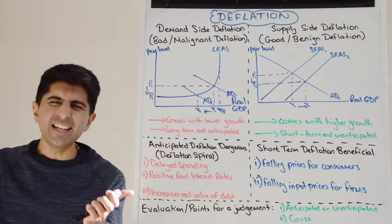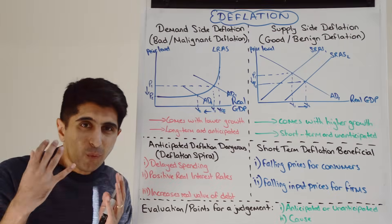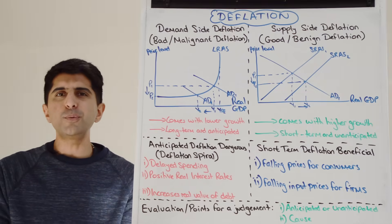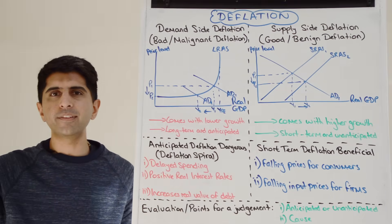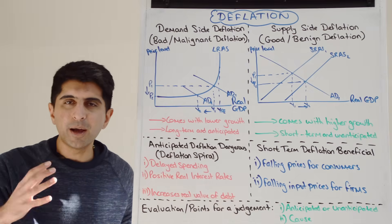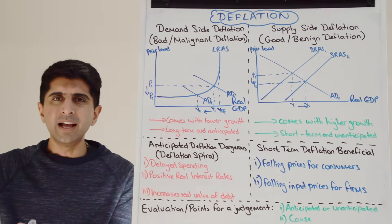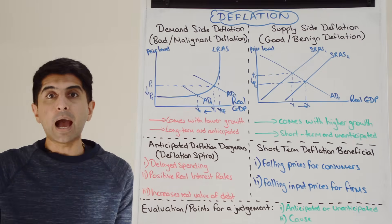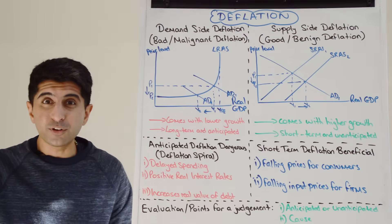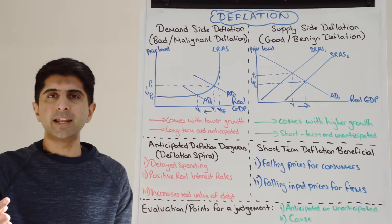If it's anticipated, deflation is dangerous — it could lead to a deflationary spiral. One major issue is that rational consumers are going to delay their spending. Why would you buy now if you know that in a couple of months prices are going to fall even further? Buy when prices hit their rock bottom — that makes logical sense. But that's bad news for the economy because consumption falls, reducing AD. Businesses then slash their prices and discount, making deflation even worse.